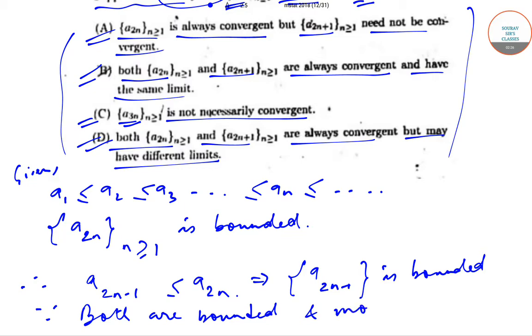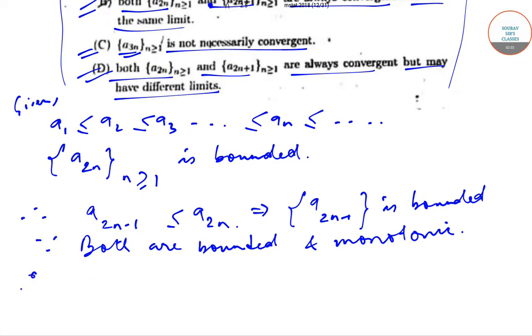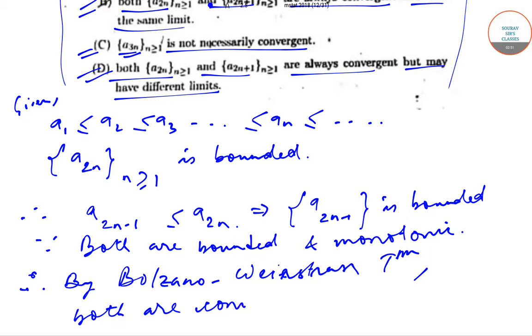Since both are bounded and monotonic, therefore by Bolzano-Weierstrass theorem, we can write that both are convergent. By both, I mean the sequences a_{2n-1} and a_{2n}.